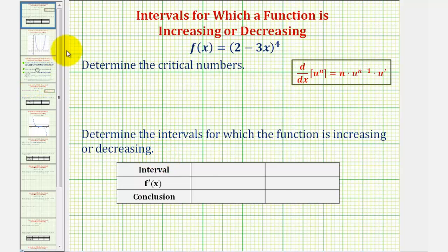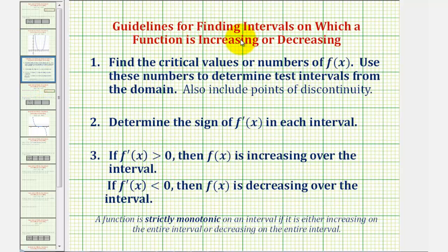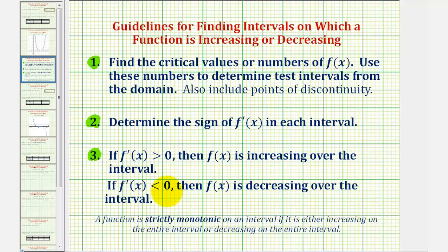For a quick review, to find the intervals for which a function is increasing or decreasing, step one is to find the critical numbers of the given function. We'll use these values to determine the test intervals from the domain of the given function. Step two will determine the sign of the first derivative in each interval — if the first derivative is positive, the function is increasing; if negative, the function is decreasing.